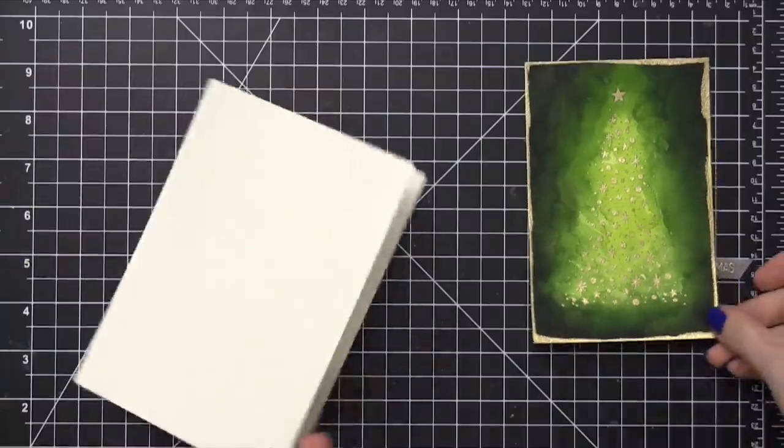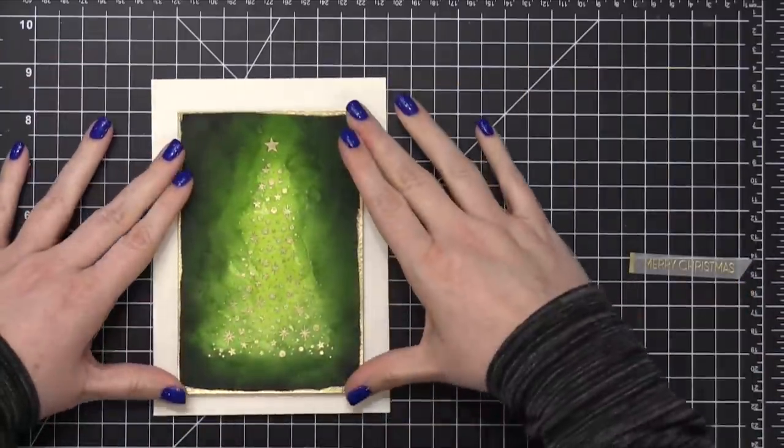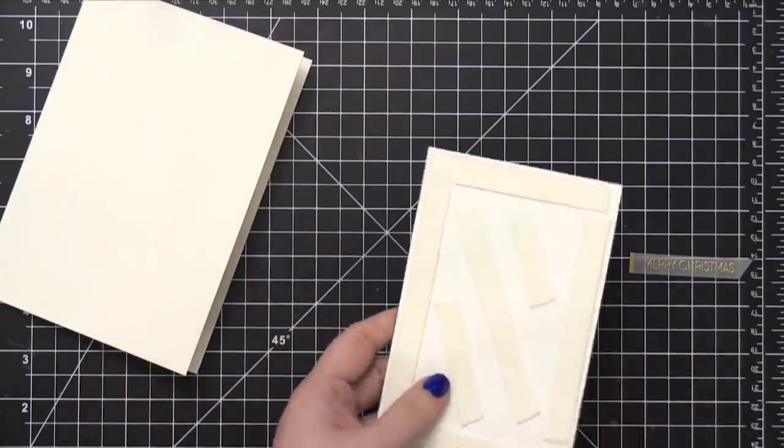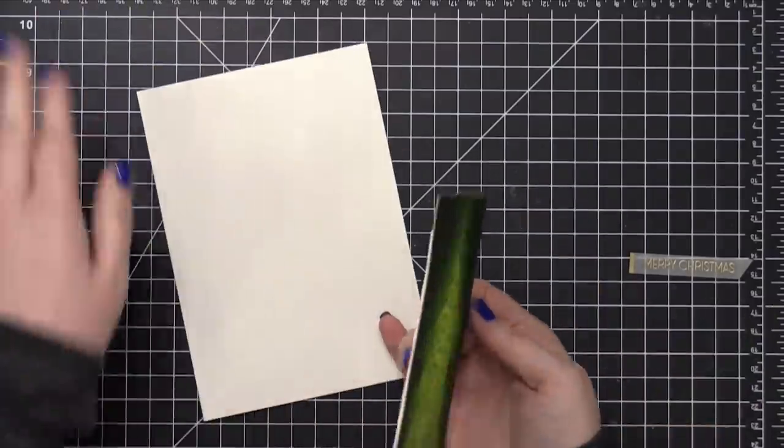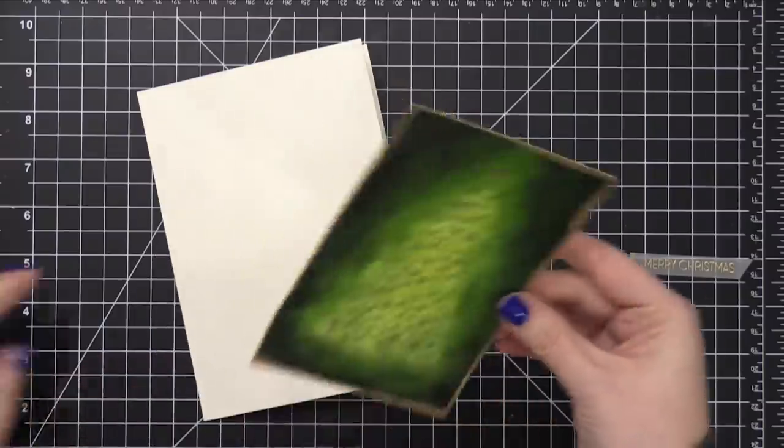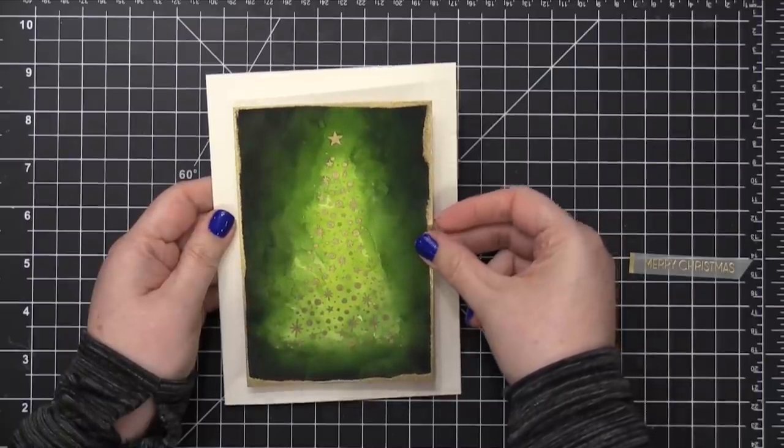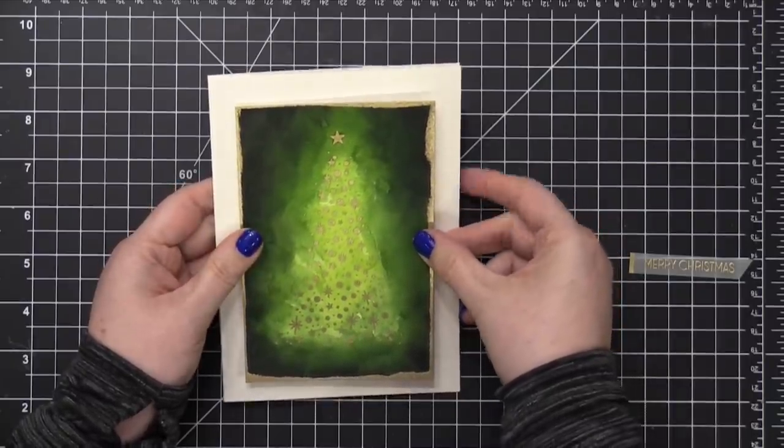I folded that over and creased the fold with my bone folder and then I put a bunch of foam adhesive behind my watercolor panel. I was not shy with the foam adhesive. I wanted to make sure that it would hold up to going through the mail and then I pressed that down onto my card front nice and centered on my five by seven card.